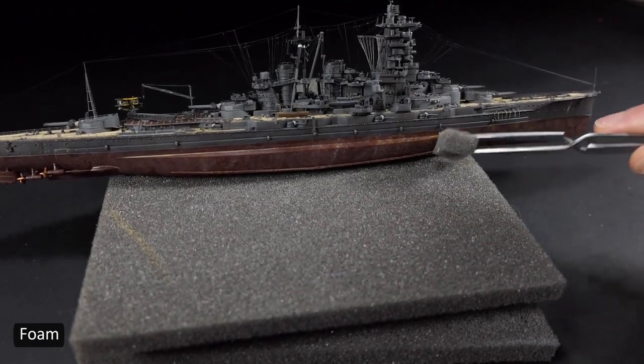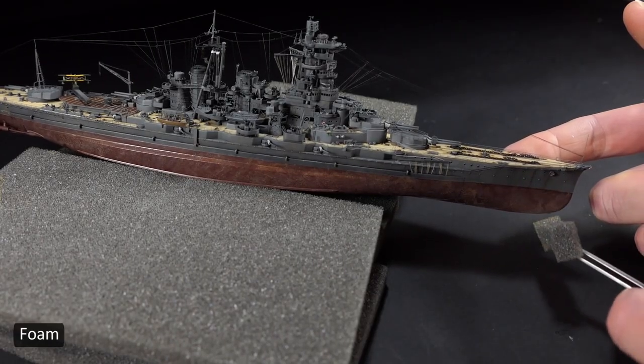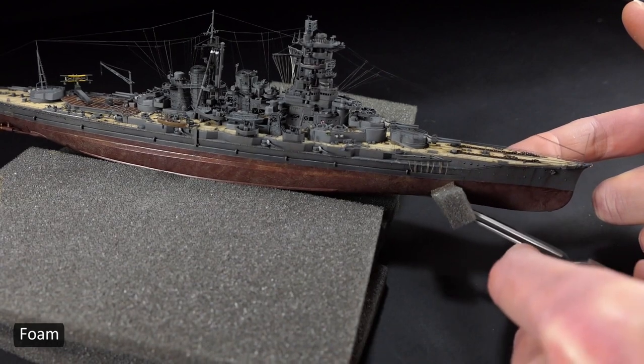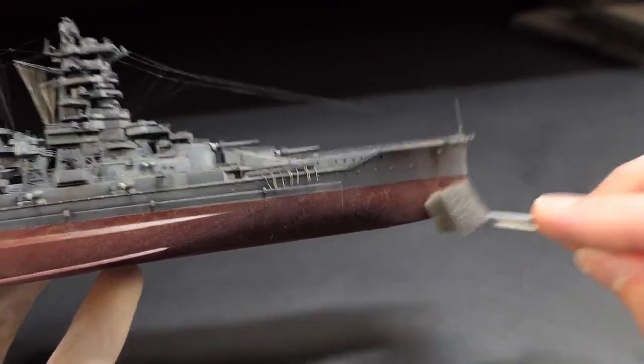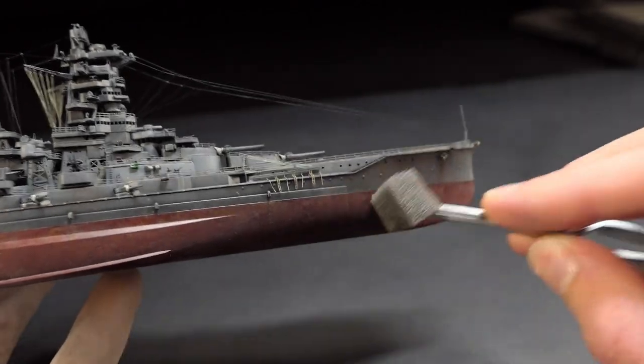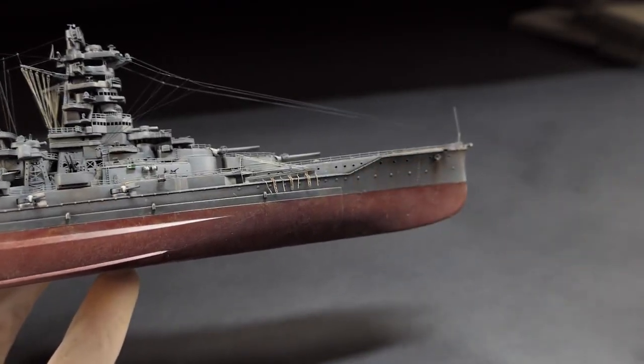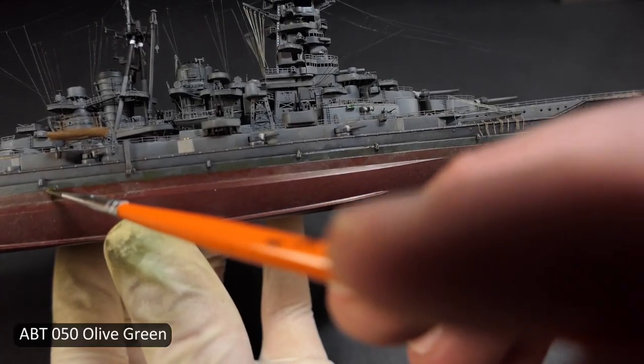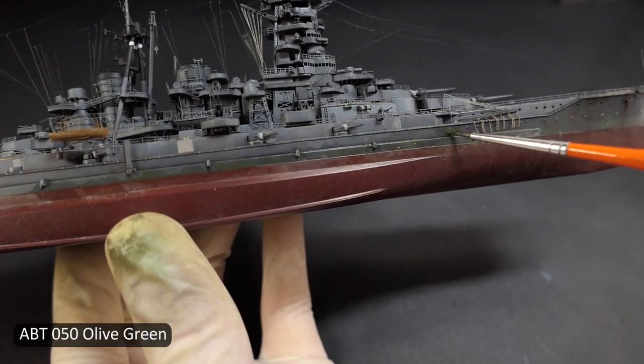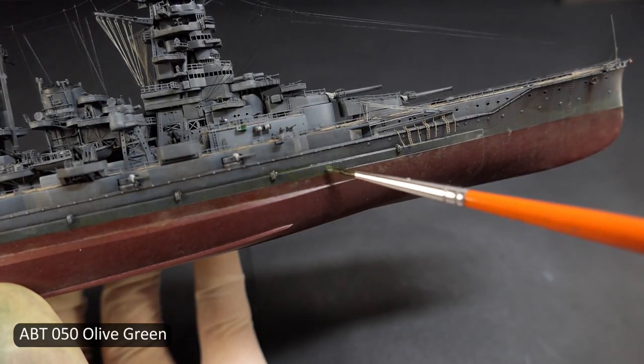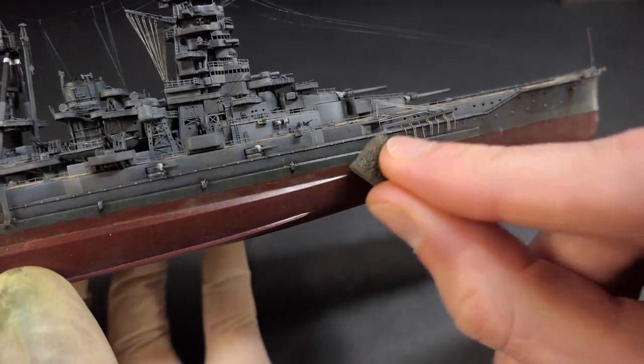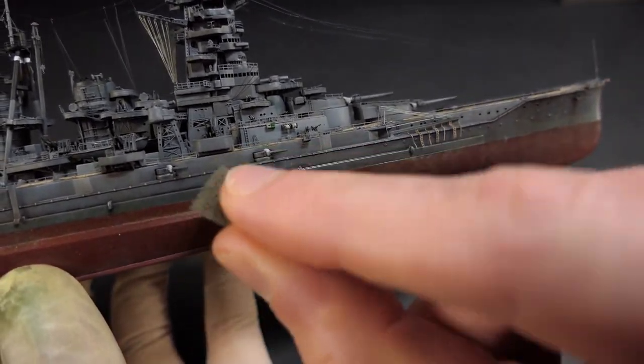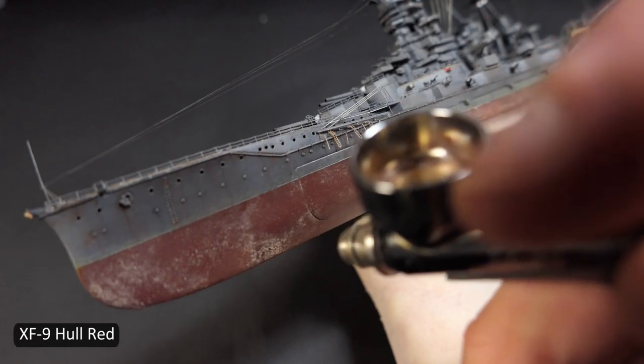Once everything was dry a couple days later, it looked way too overdone. But no worries, I used my base color of XF9 Hull Red, heavily thinned about 10 to 1, to really dull out the weathering. So it's slow going, and you gotta do it little by little, but it just adds more color variation along the way, and it really looked great in the end.